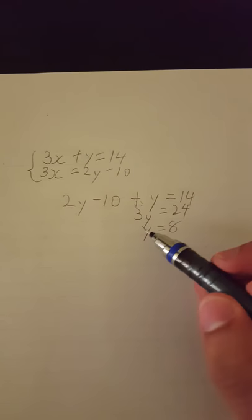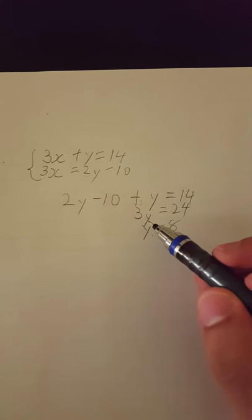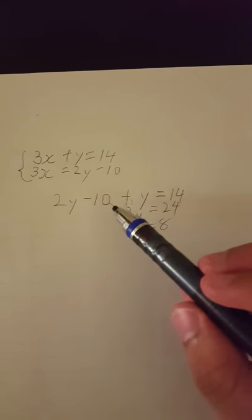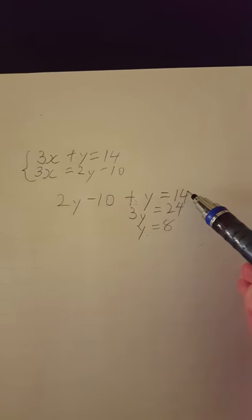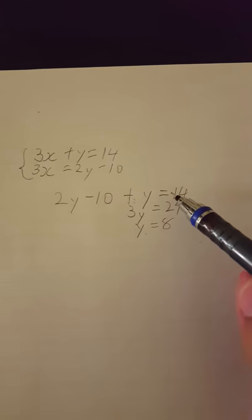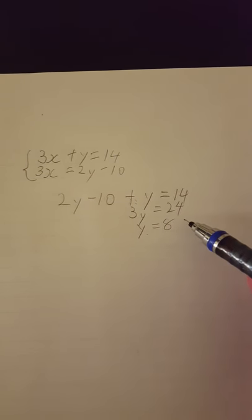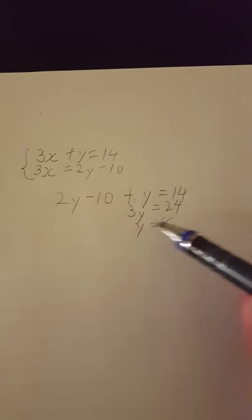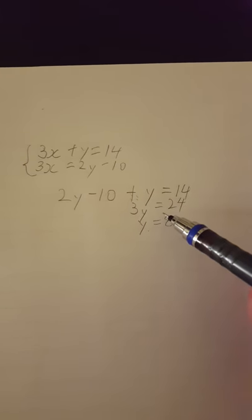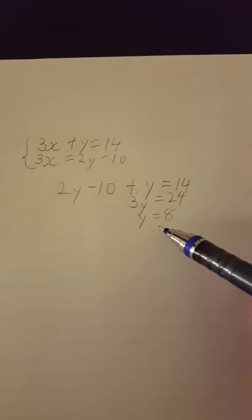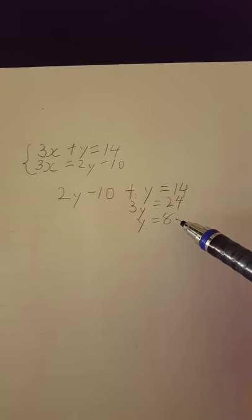Then we add both of these to get 3y, then we remove the negative 10 right over here to get 24, and then we simplify this and we get y equals 8.